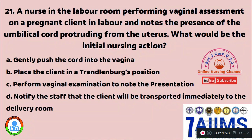Question 21: A nurse in the labor room performing vaginal assessment on a pregnant client in labor notes the presence of an umbilical cord protruding from the uterus. What would be the initial nursing action? Option A: gently push the cord into the vagina. Option B: place the client in a Trendelenburg position. Option C: perform vaginal examination to note the presentation. Option D: notify staff that the client will be transported immediately to the delivery room. When there is an umbilical cord protruding from the uterus, the initial action is to place the client in a Trendelenburg position.